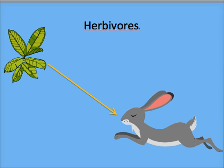Consumers cannot make their own food. They rely on eating other organisms. There are two types of consumers. The first type is herbivores. Herbivores eat only plant matter.